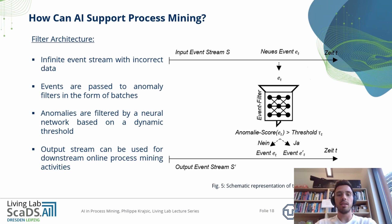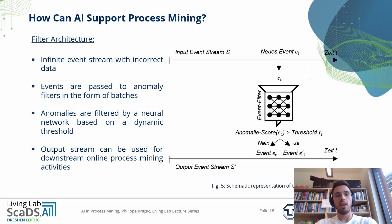Here we can see the schematic representation of our filter architecture. We have an infinite event stream with incorrect event data, and events are passed to an anomaly filter in the form of batches. Those anomalies are filtered by a neural network based on a dynamic threshold. The output stream can then be used for downstream online process mining activities like discovery, conformance checking, or enhancement.